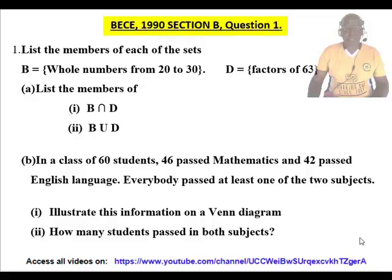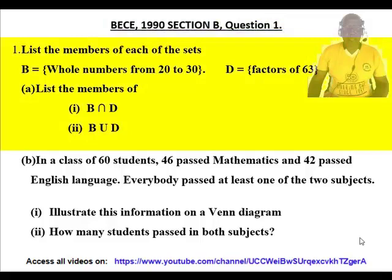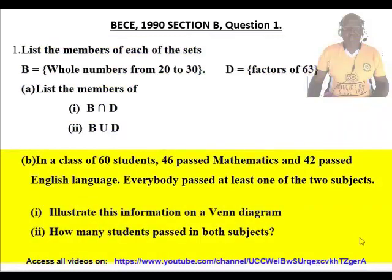BECE 1990 Section B, Question 1. List the members of each of the sets. Set B equals the whole numbers from 20 to 30. Set D equals the factors of 63. List the members of: (i) B intersection D, (ii) B union D.